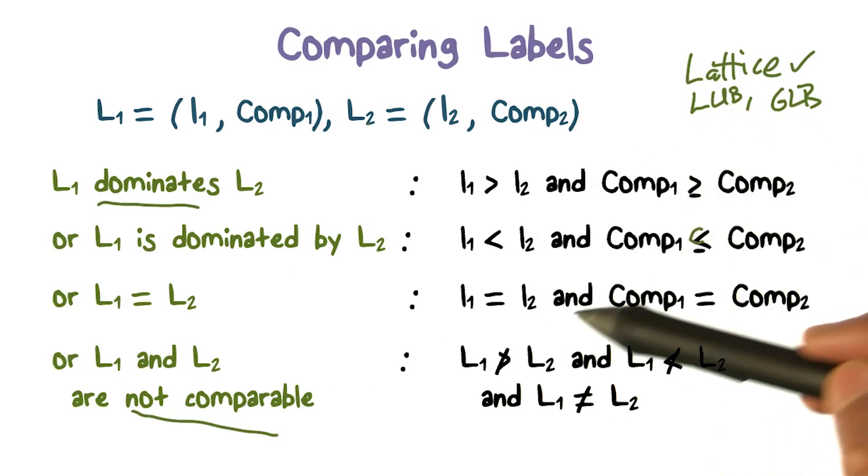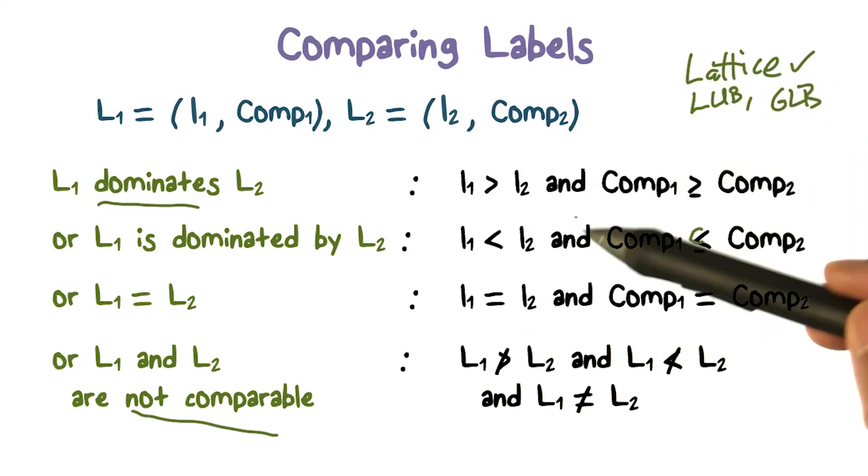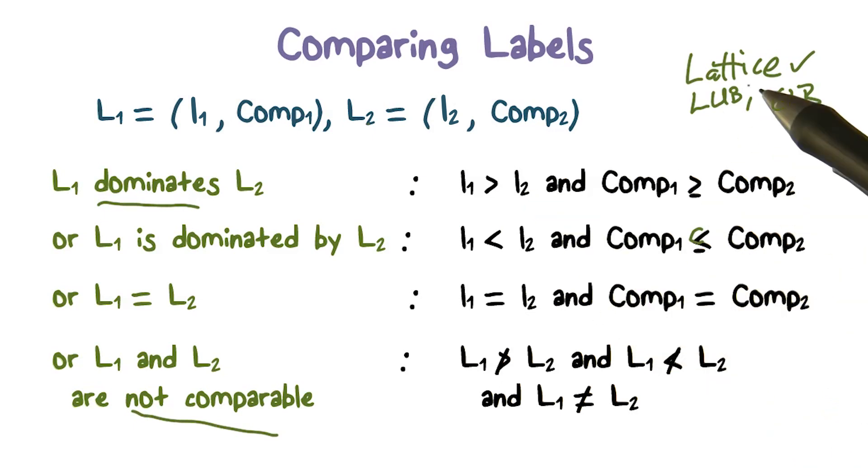So when you compare these and arrange what's dominated by who, we get the structure because of the partial and the total order we have on the different parts. The structure you get is what is called a lattice.